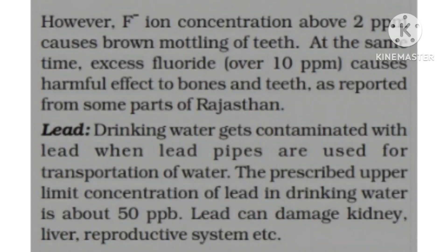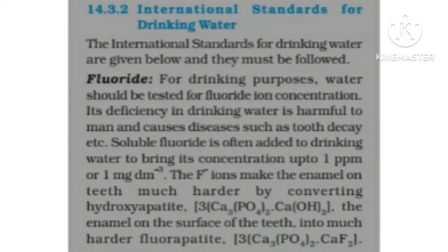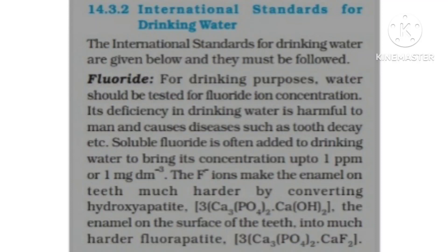Fluorine converts hydroxyapatite into fluoroapatite — enamel, which is the hardest substance in the human body. Remember: calcium phosphate with hydroxyl group is hydroxyapatite; when F₂ joins, it becomes fluoroapatite. At around 2 ppm, mottling of teeth occurs; at 10 ppm, there are harmful effects on bones. Lead affects kidney, liver, and the reproductive system.